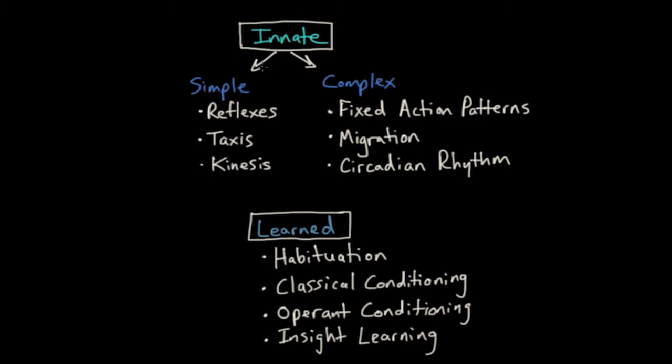I've already written down some of the most common types of innate and learned behaviors. When it comes to innate behaviors, I split them up into what I consider simple behaviors versus complex behaviors. The three types of simple innate behaviors are reflexes, taxis, and kinesis.